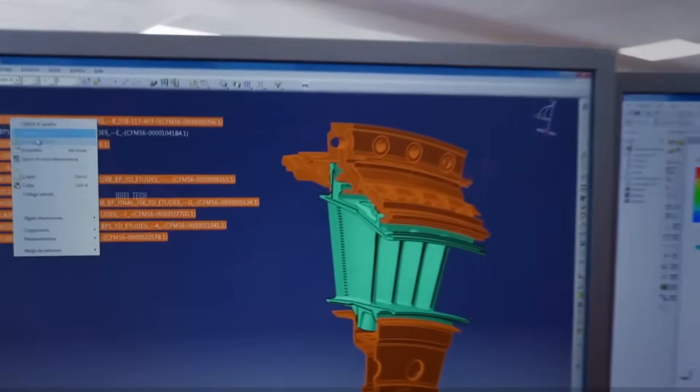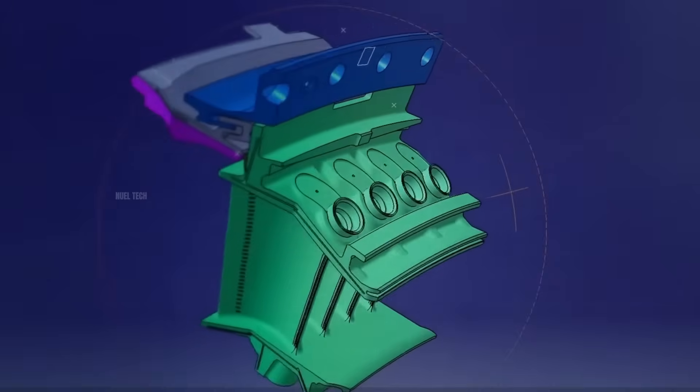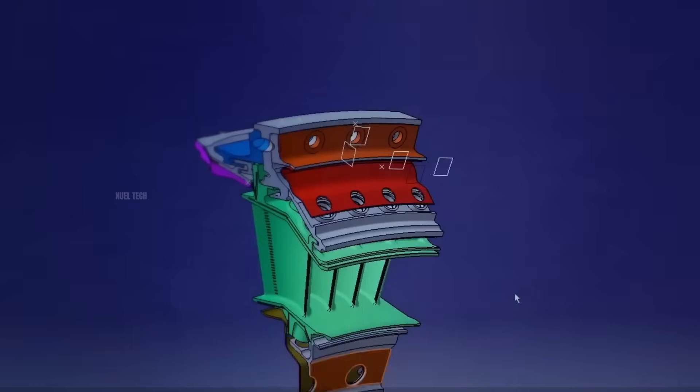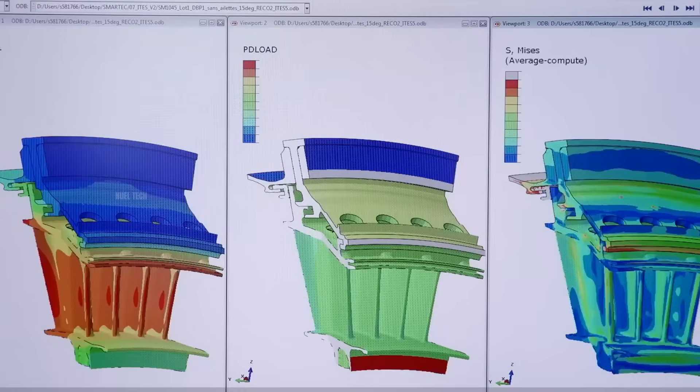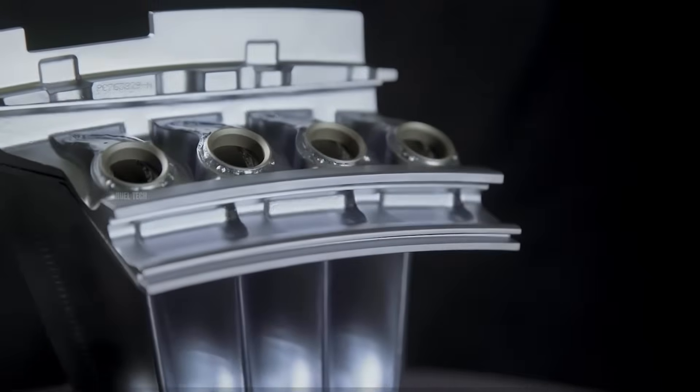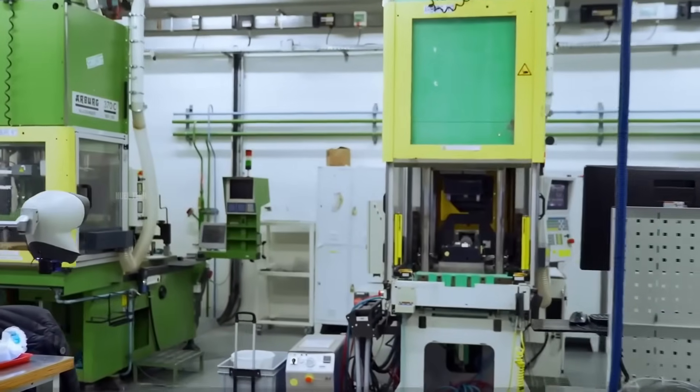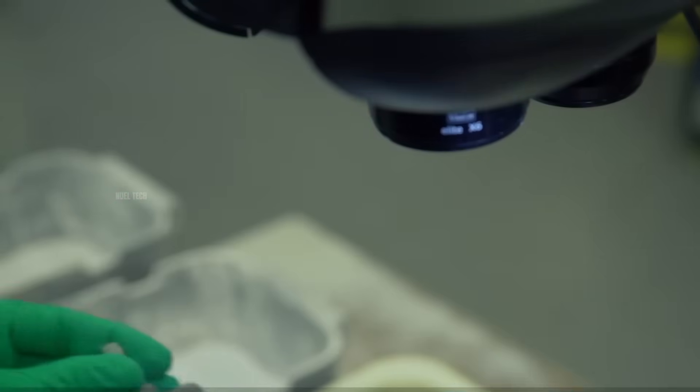The process begins by designing a 3D model of the turbine blade using specialized software that also simulates mechanical stress and thermal loads on the component. Once the design is complete, a metal mold is created, not to cast the blade directly, but to produce a wax pattern of the blade.